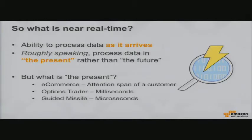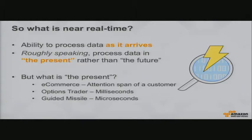Real-time means the ability to process large amounts of data as they arrive — processing data in the present rather than the future. For an e-commerce platform like Amazon.com, the present is defined by your customer's attention span; taking one second to process is fine. For an options trader in financial markets, we talk about milliseconds. In the military space, microseconds can make a difference. The present is defined by your use case — real-time just needs to be as fast as your use case requires.